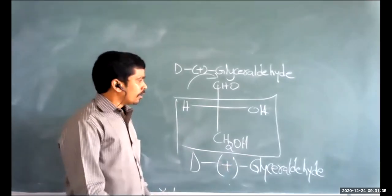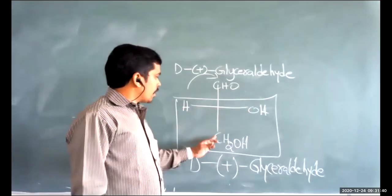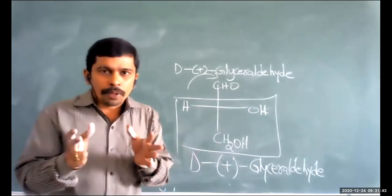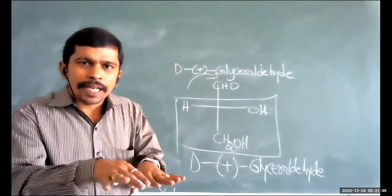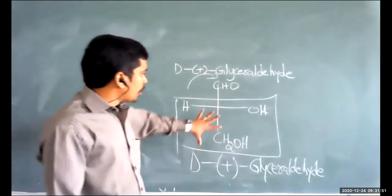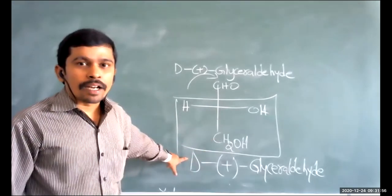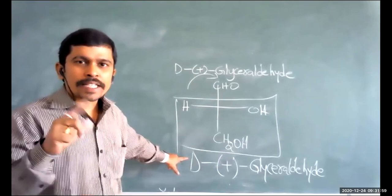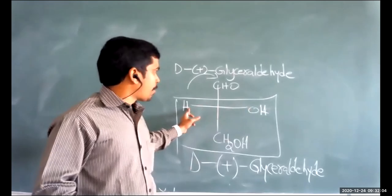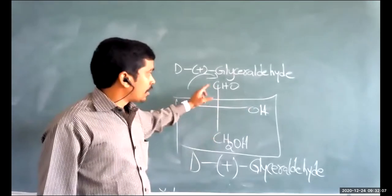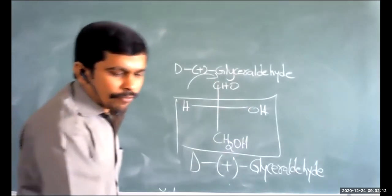Capital D configuration means the OH group is on the right side and H is on the left side — similar to D-glyceraldehyde. Small 'd' stands for dextro (optical rotation); capital D stands for relative configuration of OH and H with respect to the aldehyde and CH2OH groups.